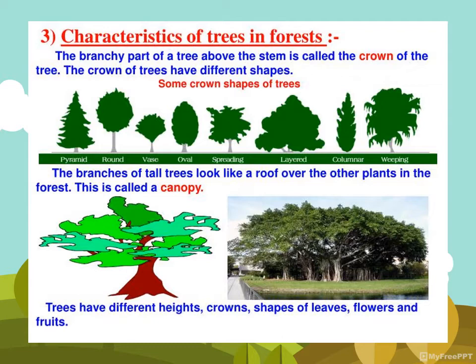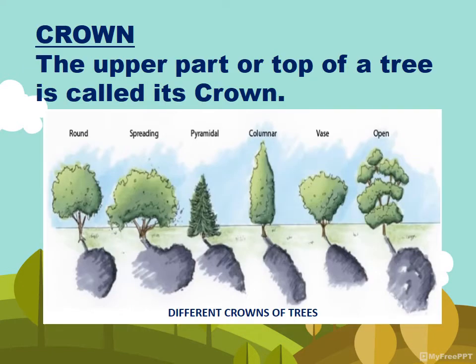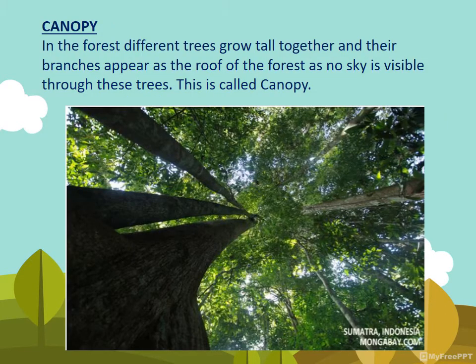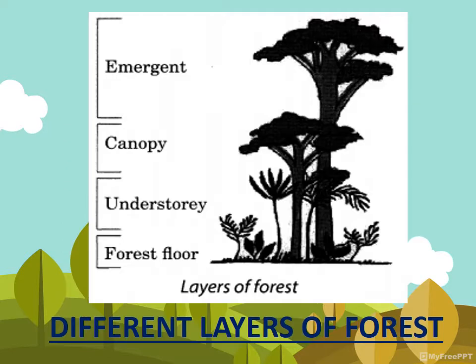The branches of all trees look like a roof over the other plants in the forest — that is called the canopy. In the forest, different trees grow tall together and their branches appear as the roof of the forest. Because no sky is visible through these branches, we call it the canopy. Trees have different heights, crown shapes, leaves, flowers, and fruits.